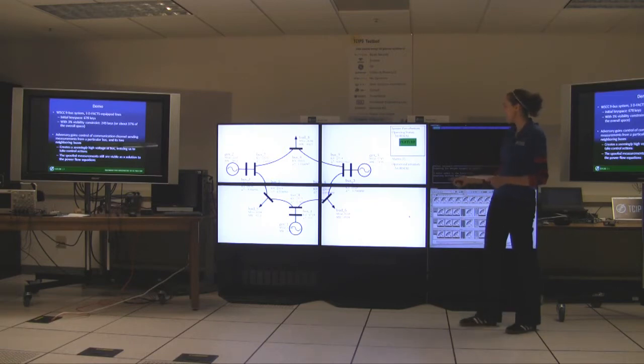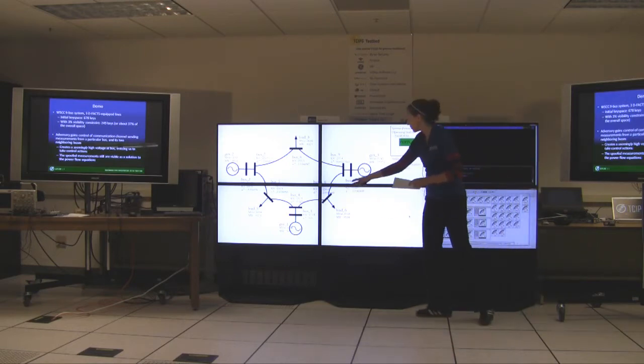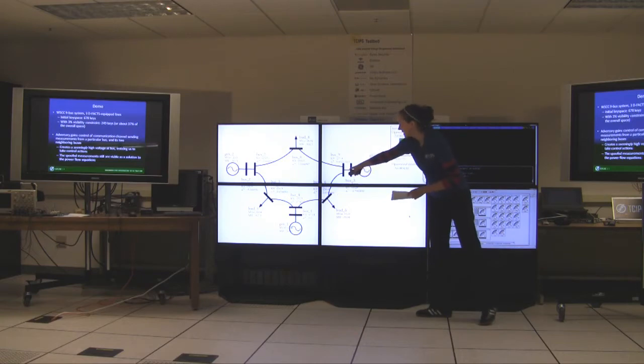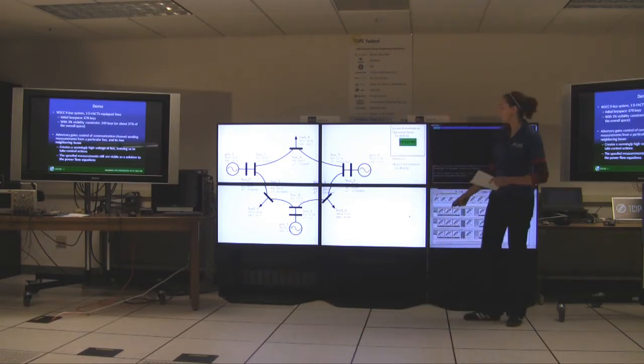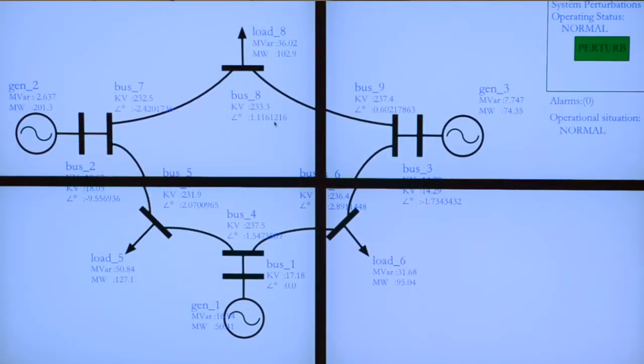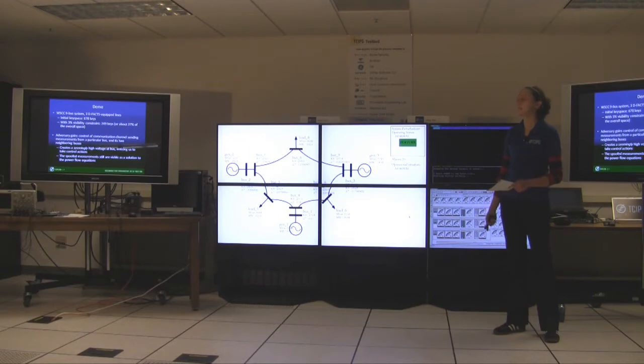What you'll see here is the adversary gains control of a communication channel sending measurements from bus 6 and its two neighbors, bus 4 and bus 9. And he creates a seemingly high voltage at this bus, enticing us to take some sort of control action. The one thing to note about these spoof measurements that the adversary is using in the demo is that they're still viable as a solution to the power flow equations.